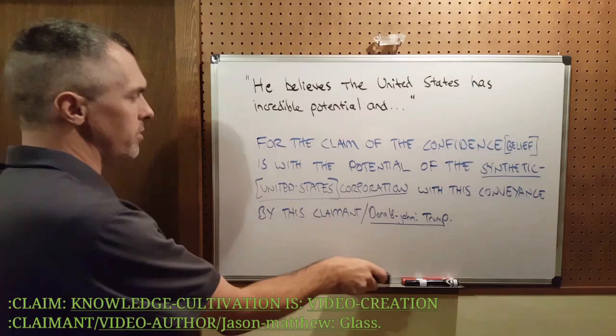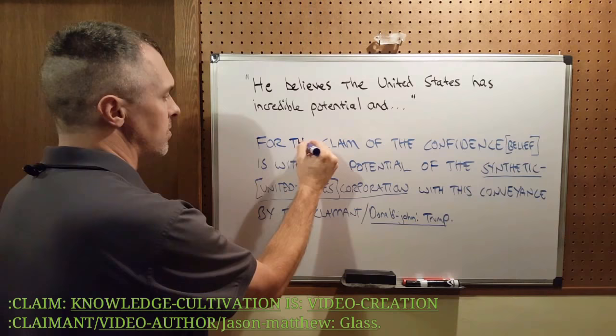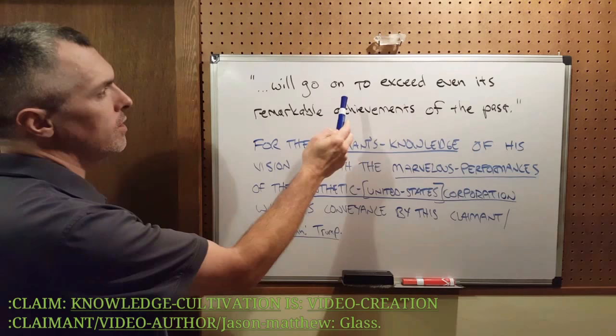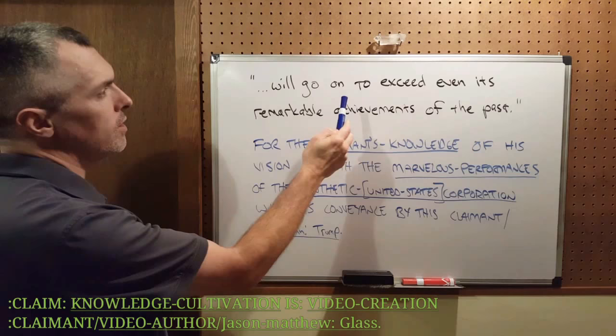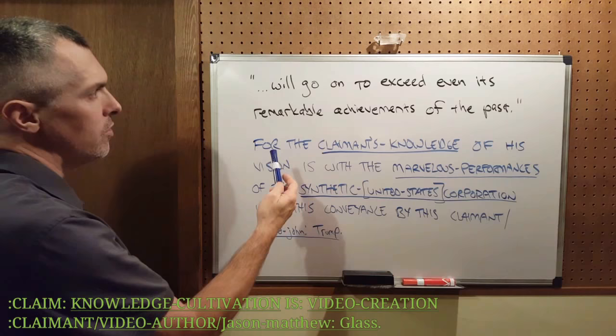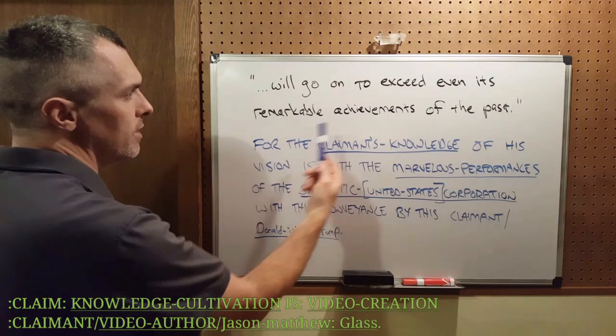Or, you know, to make it more specific, you could say 'by this claim.' And the second part of that compound sentence is: 'will go on to exceed even its remarkable achievements of the past,' which basically says 'will go on' — no contract — no contract — no contract. It's no contract, no contract, of the past.